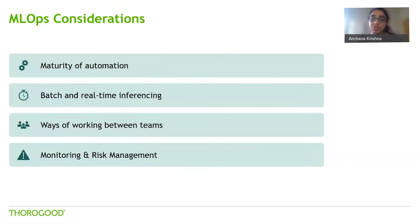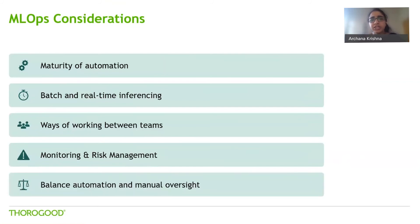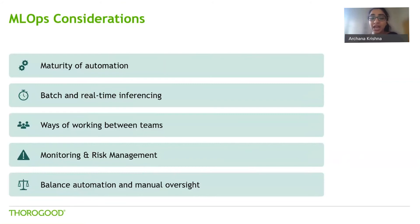For example, is it about monitoring degrading performance over a sustained period of time, or do you want to flag every single occurrence? The final consideration is striking the right balance between automation and manual oversight. While it's great to have a fully automated solution, the more realistic situation is that you will want to build in manual review and intervention — be it approvals for deployment or having someone review why model performance has dropped before automatically retraining. You may define different thresholds based on the priority and significance of that particular business use case.